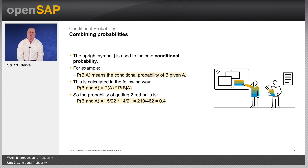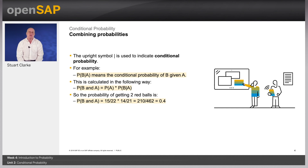Just a reminder: the pipe symbol is used to indicate conditional probability. For example, the probability of B given A — the pipe symbol followed by A — means the conditional probability of B given A. The probability of B and A equals the probability of A multiplied by the probability of B given A.